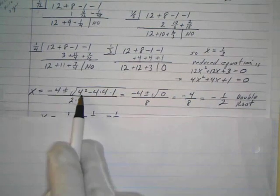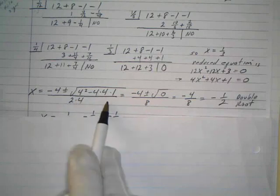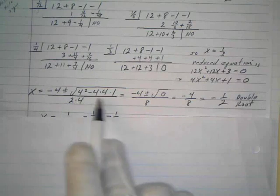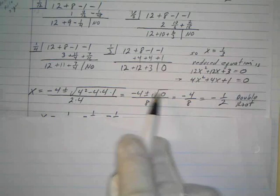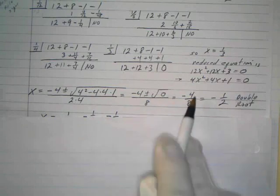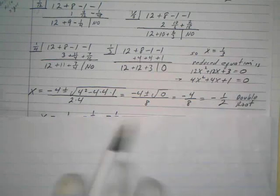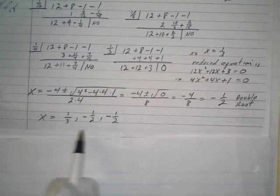x = (-b ± √(b² - 4ac)) / 2a. Make those substitutions. I've got 16 minus 16 is 0, so I actually have a double root because the radical zeros out. I end up with -4/8, or -1/2, and that's a double root. So those are your three roots: 1/3, -1/2, and -1/2 as a double root.